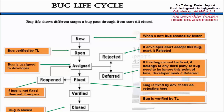Now there are some interview questions related to this. First: do you follow this bug lifecycle? Answer is yes, but not completely. In practice, we are not following the 'open' and 'verified' stages. Because in real environments, if I as a tester have reported a bug, it's my responsibility to verify it before reporting. So if I'm reporting a bug, it will be a valid defect — my lead will not verify it again. Similarly, if the developer marks it fixed and I confirm it's fixed, I will directly close it without setting it 'verified'. These stages are not used in real-time applications.